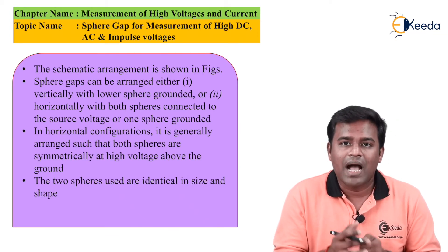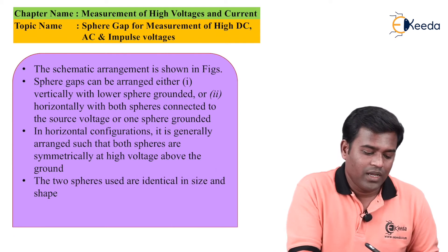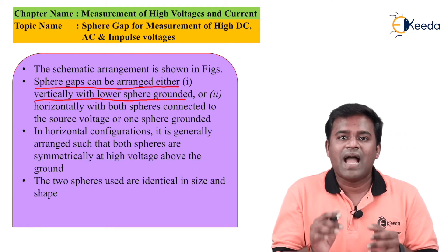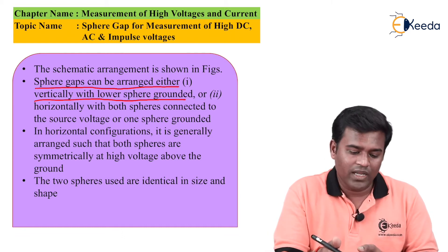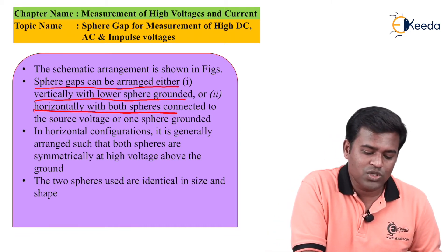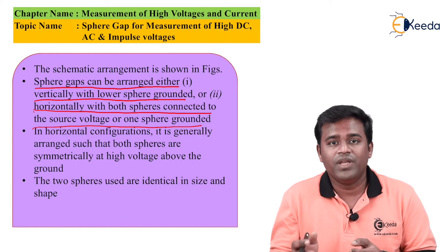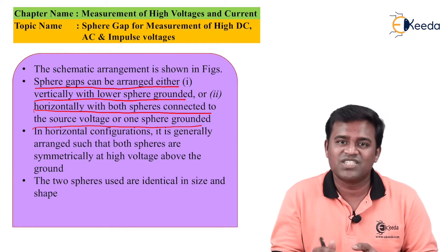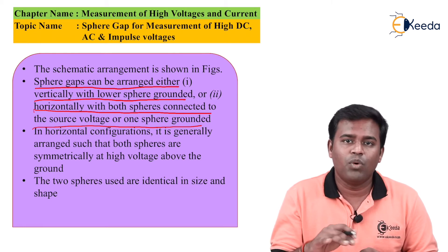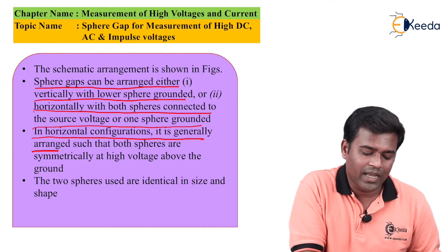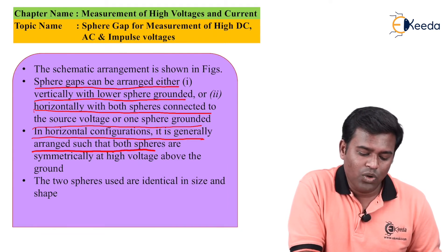We will now see the Sphere Gap arrangement and how it is set up. Sphere Gaps can be arranged either vertically with the lower sphere grounded, or horizontally with both spheres connected to a voltage source and one sphere grounded. In the horizontal configuration, it is generally arranged such that both spheres are symmetrically at high voltage above the ground.